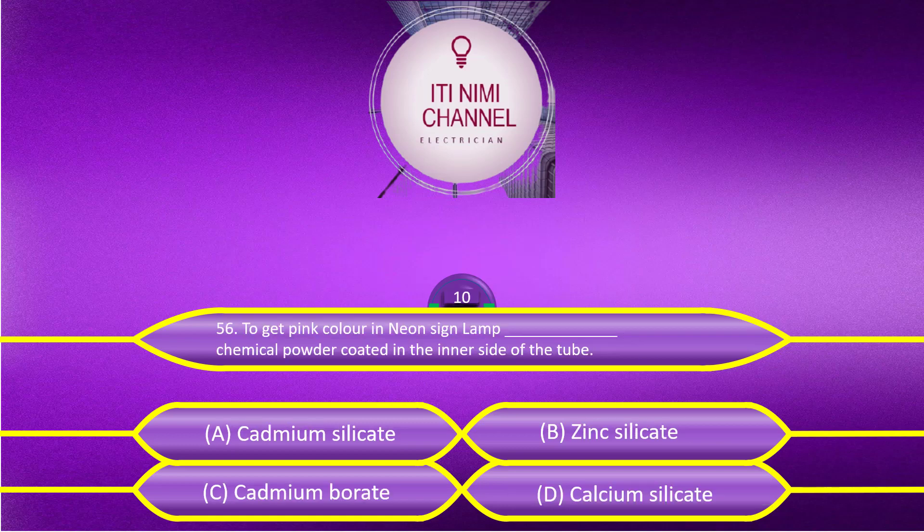To get pink color in a neon sign lamp, which chemical powder is coated on the inner side of the tube? Option A, cadmium silicate. Option B, zinc silicate. Option C, cadmium borate. Option D, calcium silicate.